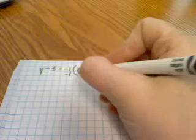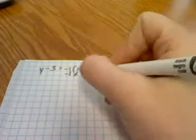Negative 1 times x is negative 1x. Negative 1 times 2 is negative 2. And this allows me to eliminate the parentheses.